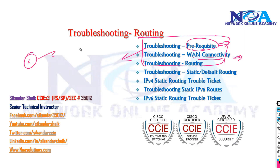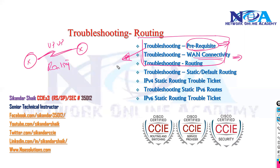Before you start troubleshooting the routing, we need to make sure that the link should be up and up. If the link is not up, then whatever routing you implement is not going to work. These are common steps regardless of what type of routing you are using — whether static, dynamic, OSPF, EIGRP, or any protocol — these steps remain the same.